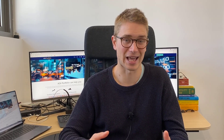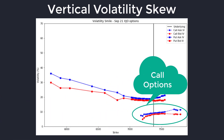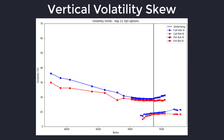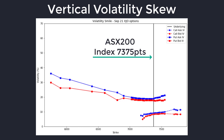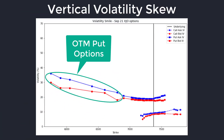By looking at this for the ASX200, for September call and put options, I've come up with the above volatility skews. You can see that the lower curve in the right-hand corner is for the call options, and the higher implied volatility curves are for the put options. I've represented this in terms of the bid and ask prices in the marketplace. I've plotted where the underlying is at the moment — the level of the index at 7,375 — shown as the black line in this graph.